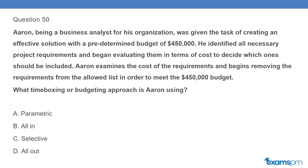Question 50: Aaron, being a business analyst for his organization, was given the task of creating an effective solution with a predetermined budget of $450,000. He identified all necessary project requirements and began evaluating them in terms of cost to decide which ones should be included. Aaron examines the cost of the requirements and begins removing requirements from the allowed list in order to meet the $450,000 budget. What timeboxing or budgeting approach is Aaron using? A. Parametric. B. All in. C. Selective. D. All out.